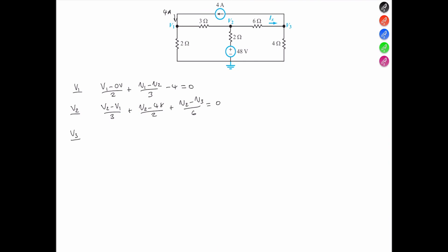At terminal 3, V3, we take V3 with reference to V2, divided by the 6-ohms, plus V3 minus 0 volts, or we just call it V3 over the 4-ohms.